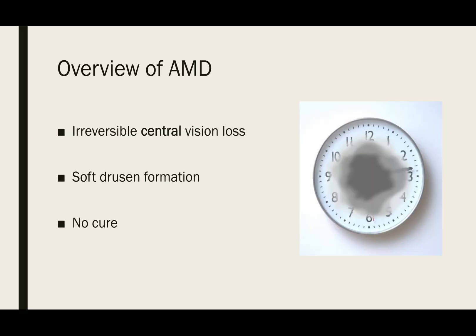In brief, age-related macular degeneration, or AMD, is a disease that leads to irreversible vision loss caused by damage of the macula. The formation of soft drusen from backed-up retinal secretions are thought to contribute. Currently, there is no cure for this disease, and management involves modifying risk factors to slow disease progression. We will discuss these points in more detail later in the presentation.